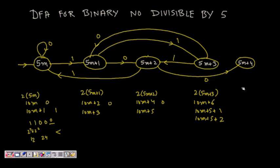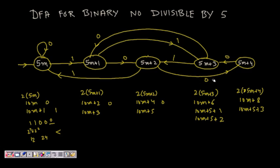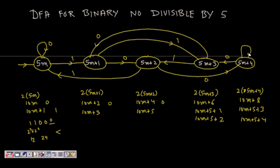For a number of the form 5m+4: multiplying by 2 gives 10m+8, which equals 10m+5+3, leaving remainder 3. So on seeing a 0, we go to the state for 5m+3. If we append a 1, it becomes 10m+5+3+1 = 10m+9, leaving remainder 4, so we remain in the state for 5m+4.